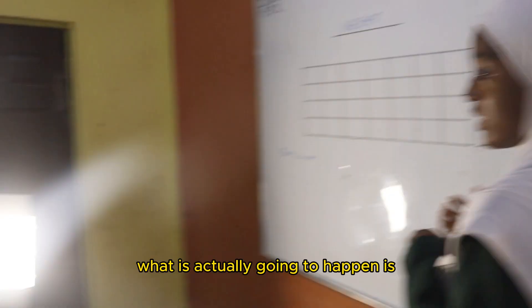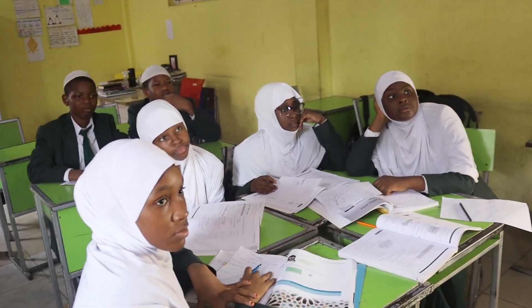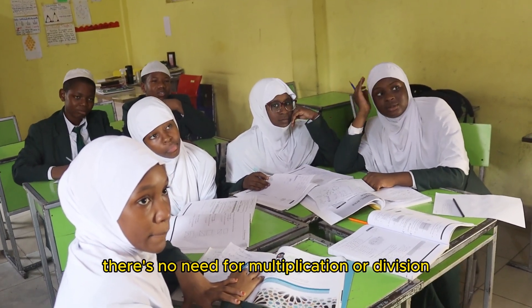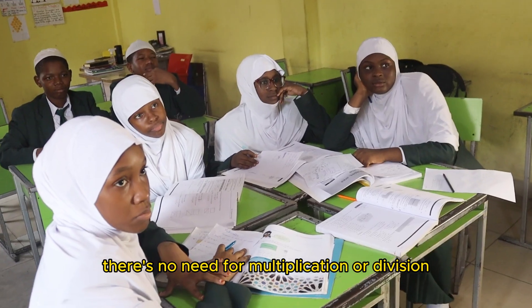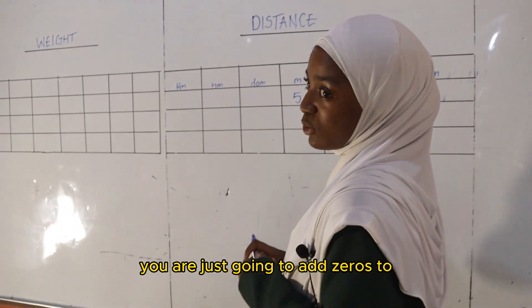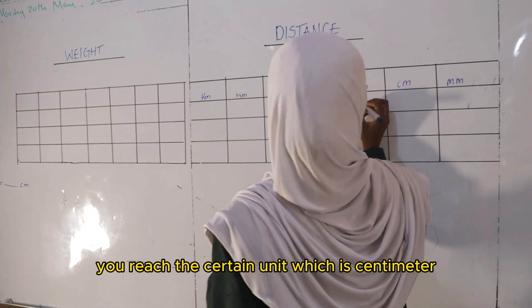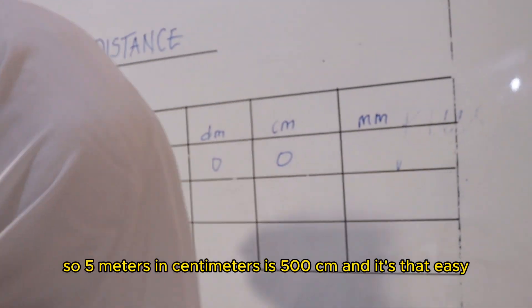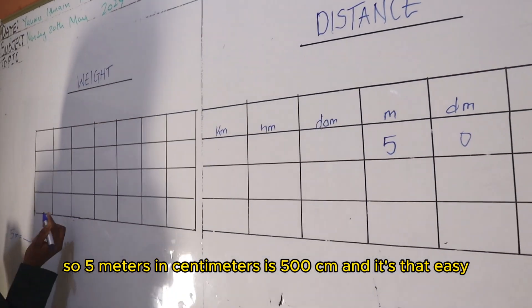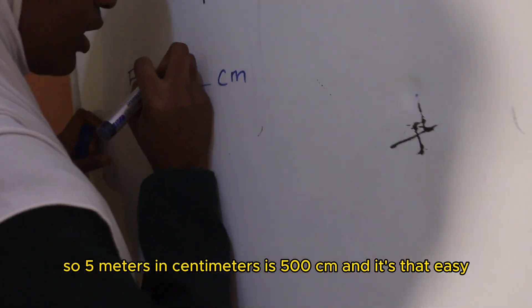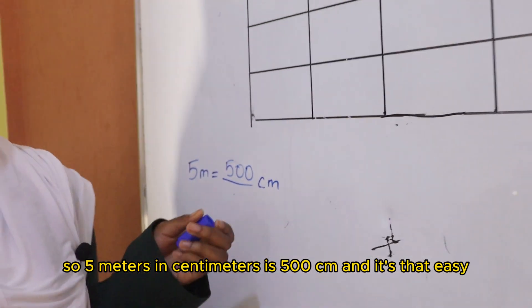So now, what is actually going to happen is very straightforward. There is no need for multiplication or division. You are just going to add zeros until you reach a certain unit, which is centimeters. So 5 meters in centimeters is 500 centimeters.